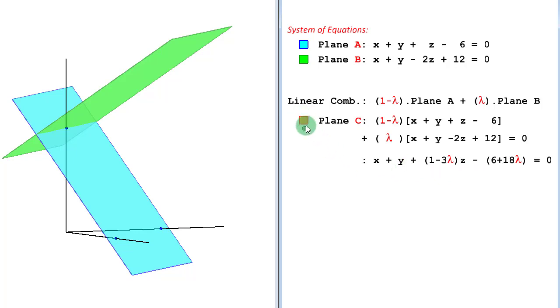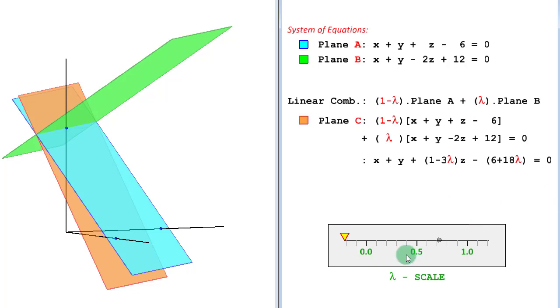Let's plot that in orange color. And now we are going to vary this constant with which we have multiplied, the value of lambda. Let's have a scale that shows the value of lambda and we'll start varying it. As we vary, you can see the blended plane, the third plane, the resulting plane of linear combination is going to rotate.